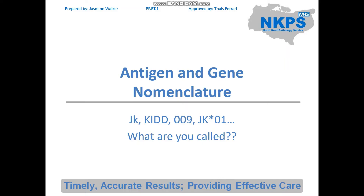When you work in blood transfusion you will find, depending on who you talk to or what you're talking about, everyone will call antigens and antibodies different names. As highlighted, you've got JK, you've got Kidd, you've got 009, JK star 01. We're basically going to go through what all that means and why there are so many names floating around for different antigen groups.